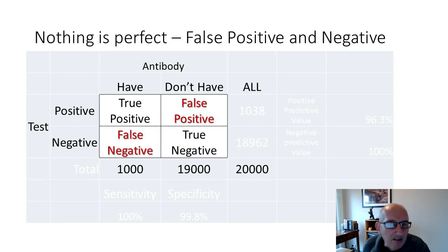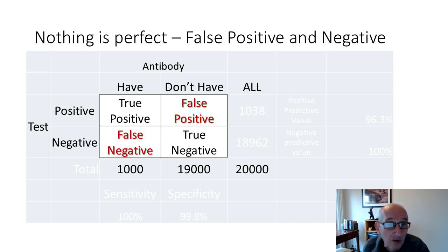But laying it out like this does highlight that there are also ways that tests could get things wrong. The negative tests could occur in people who have antibodies, and the positive tests could occur in people who don't. So you have the possibility of false negative tests and false positive tests.